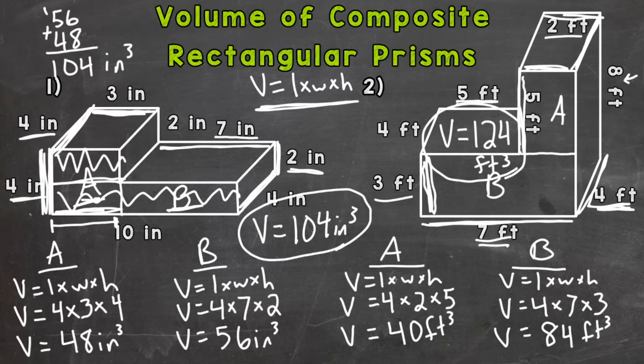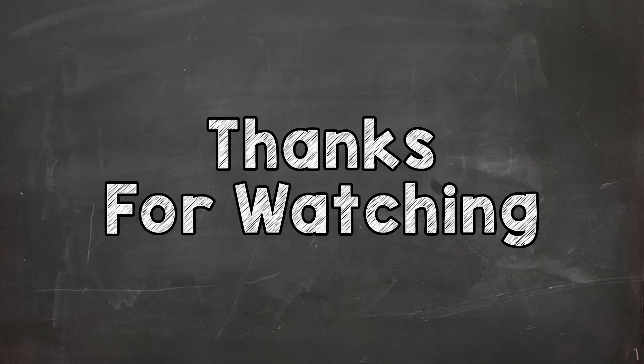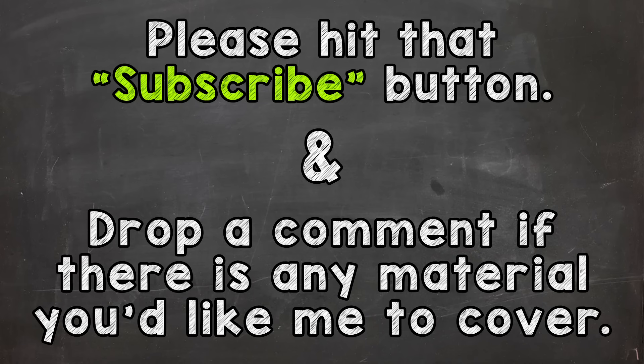So there you have it. There's how to calculate the volume of composite rectangular prisms. Break your figure down into two rectangular prisms and then add those volumes together to get the volume of the entire figure. Hopefully that helped. Thanks so much for watching. Until next time. Peace.